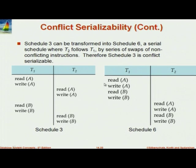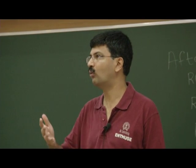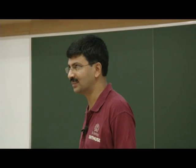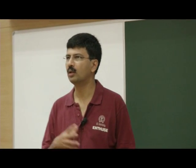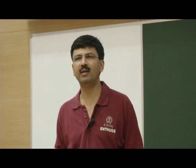A schedule can be transformed into another by a series of swaps of non-conflicting instructions — that makes them conflict equivalent. Schedule 3 is conflict serializable: those pairs of instructions can be swapped and pulled up above the others, yielding a serial schedule. Importantly, we don't care what is happening in between the reads and writes — whatever the application computed in between, this will hold regardless. It will still be serializable.